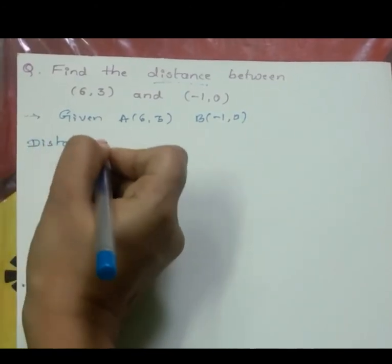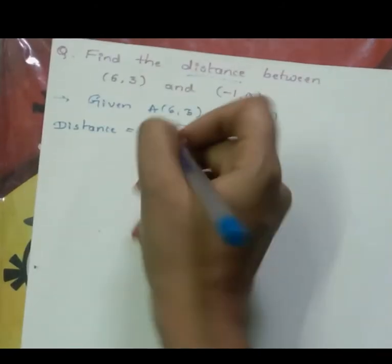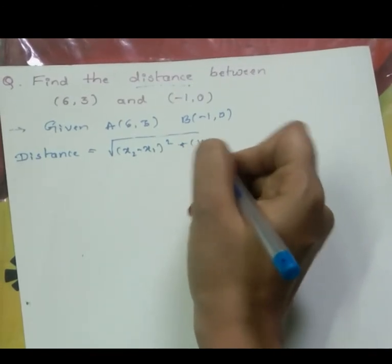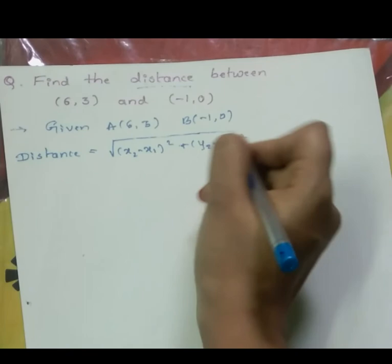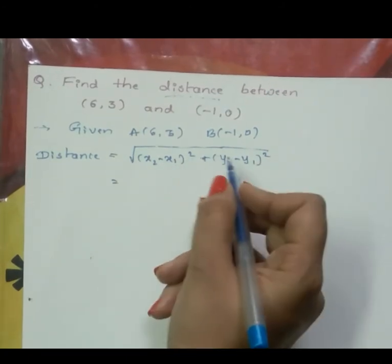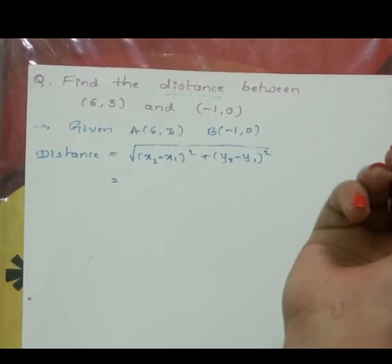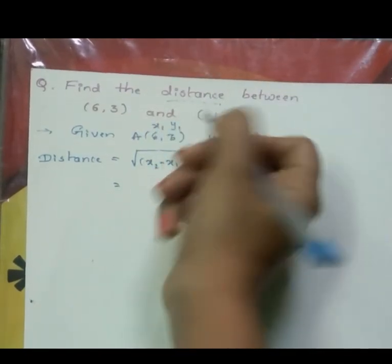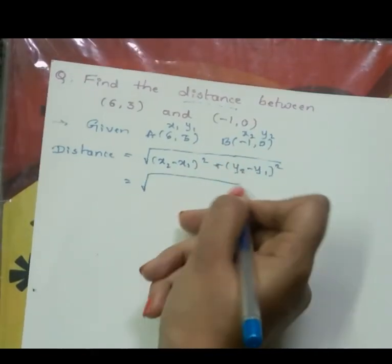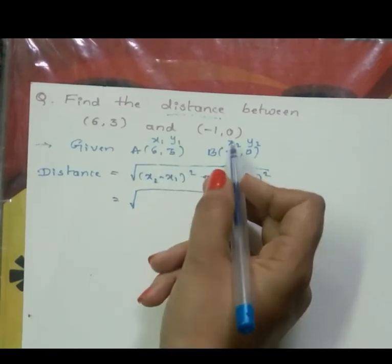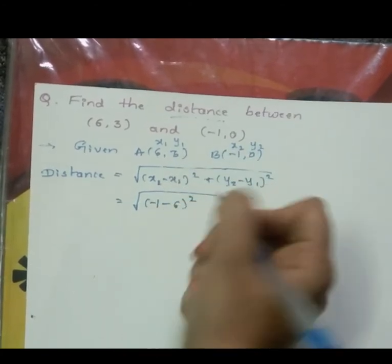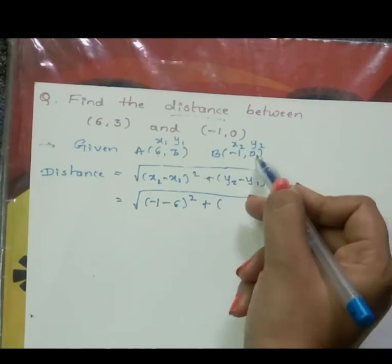Distance equals square root of (x2 minus x1) whole square plus (y2 minus y1) whole square. We take the first point as (x1, y1) and the second point as (x2, y2). Substituting: x2 is -1, x1 is 6, y2 is 0, y1 is 3.